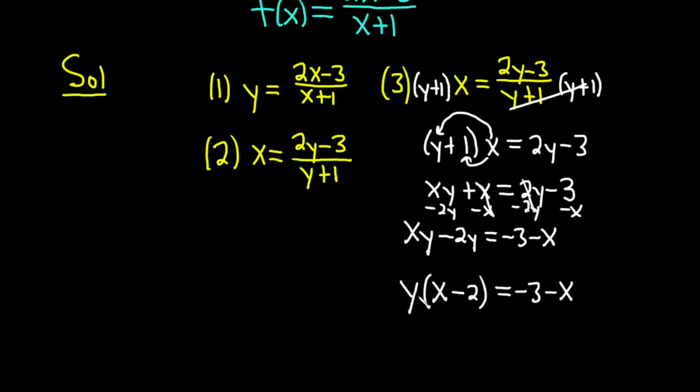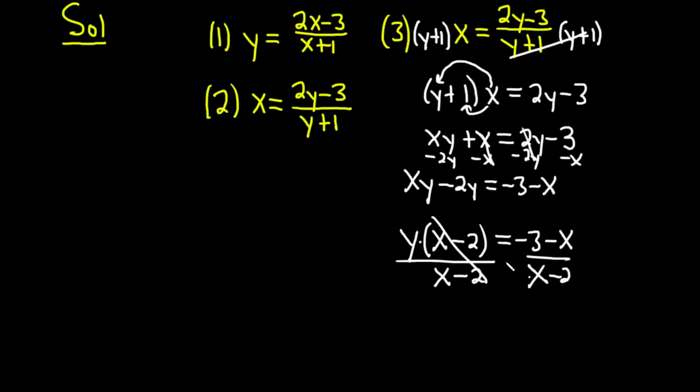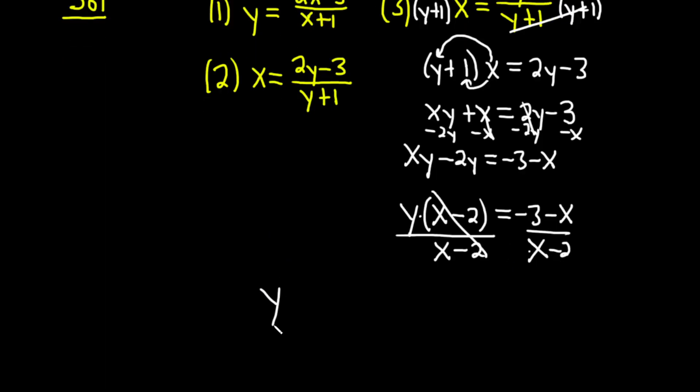And we're looking for y. It's being multiplied by x minus 2. So we can divide both sides by x minus 2. And then this cancels. And so we end up with y equals negative 3 minus x over x minus 2.